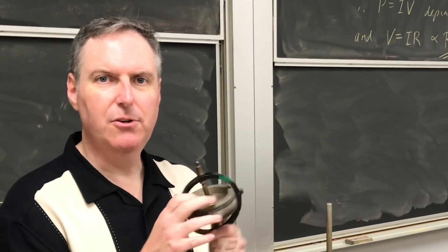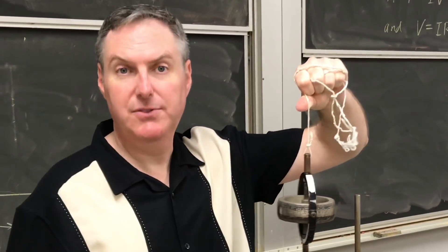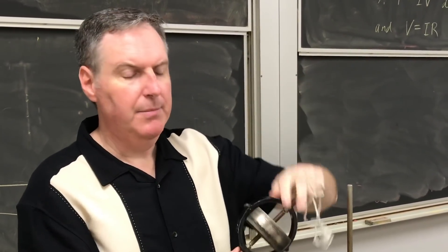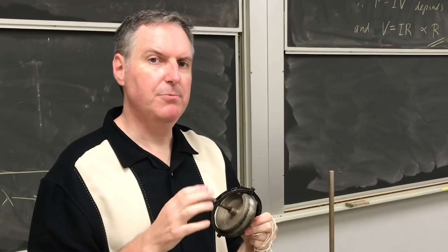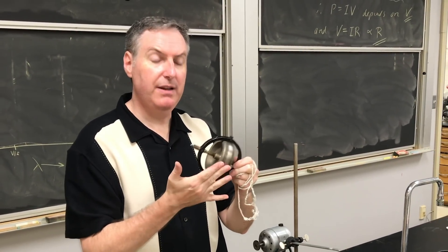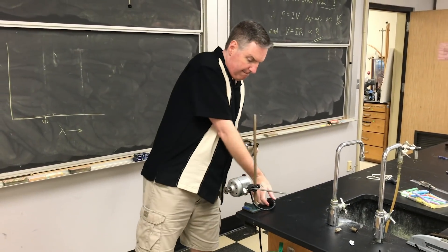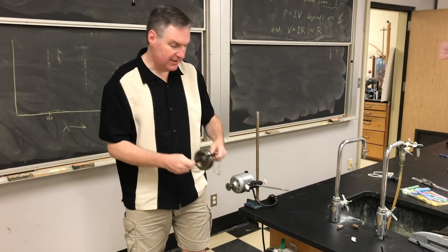All right, so I have a gyroscope here and as you can see, it's held by some string and if I let go of it, it just dangles just like you'd expect it to do. But the thing that makes these gyroscopes so sensitive to motion is what happens when they start spinning. So I've got a spinner right here. We're going to go ahead and get this going. We're going to see what happens when this thing's spinning.